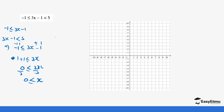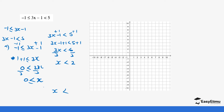The second inequality is three x minus one is less than five. Adding one to both sides gives three x is less than six. Dividing by three — since we are not dividing by a negative number the sign does not change — gives x is less than two. Combining both results: x is greater than or equal to zero, and x is less than two.